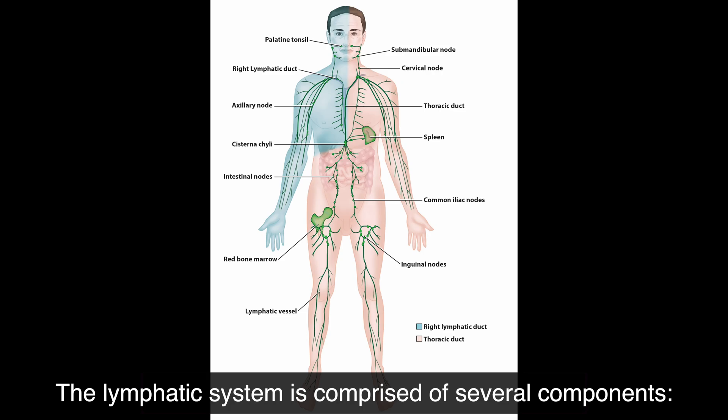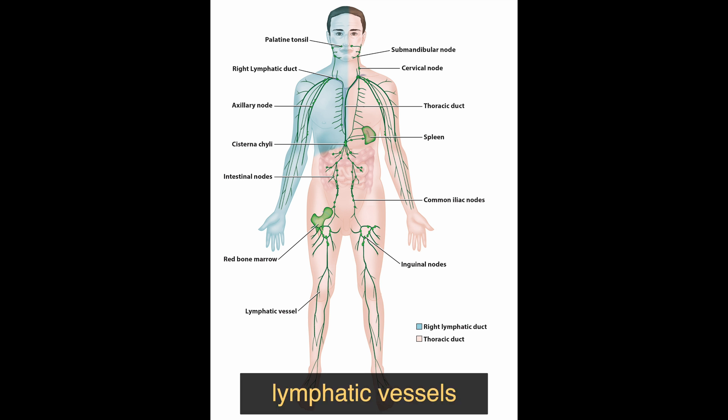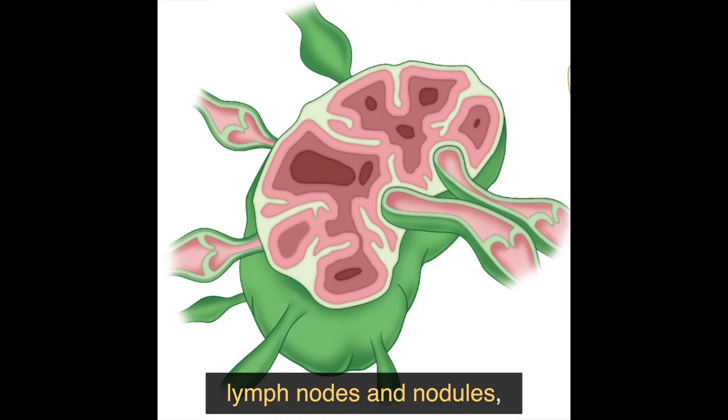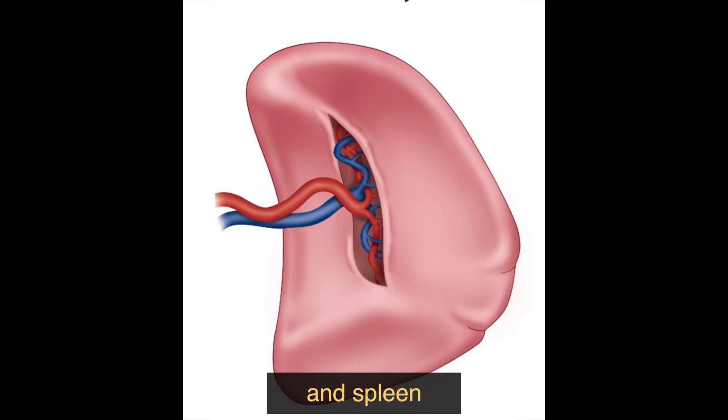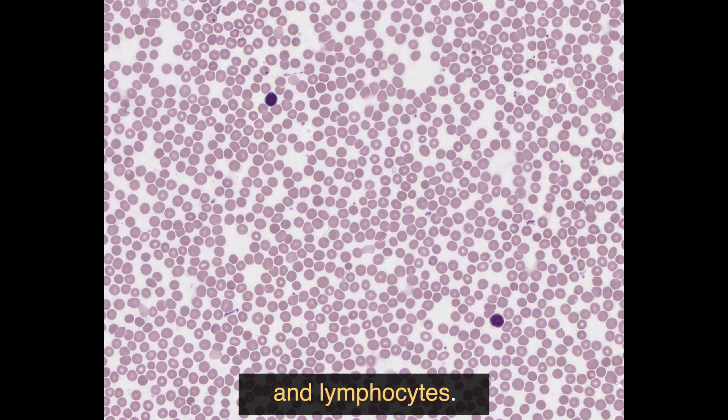The lymphatic system is comprised of several components: lymph, lymphatic vessels, lymph nodes and nodules, the thymus gland and spleen, and lymphocytes.